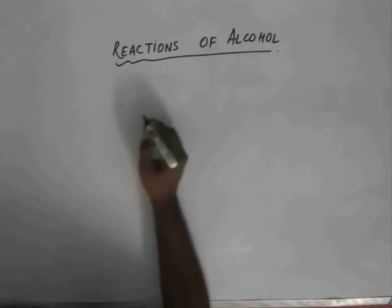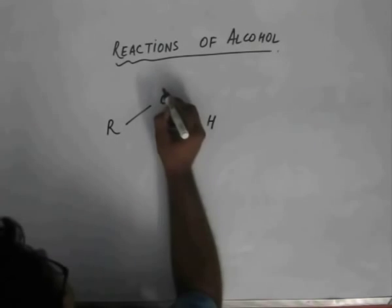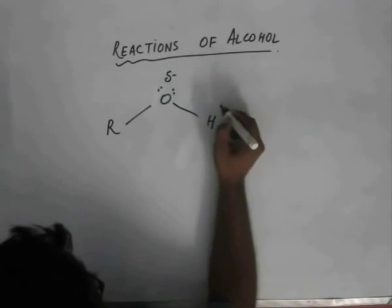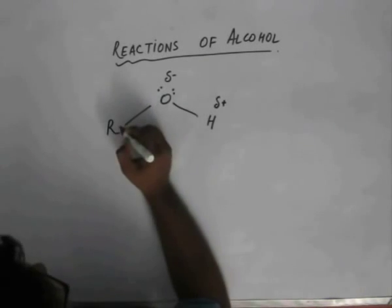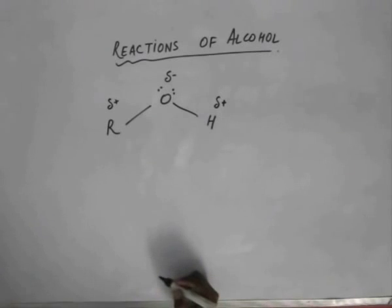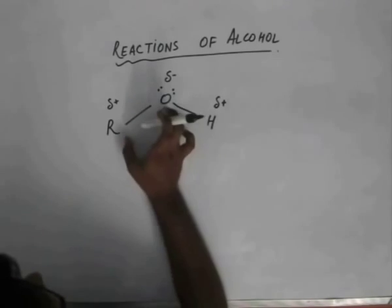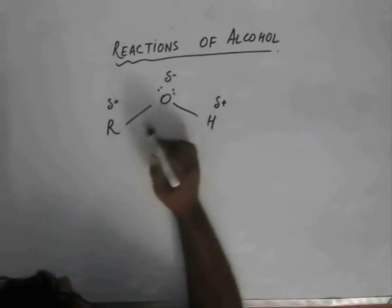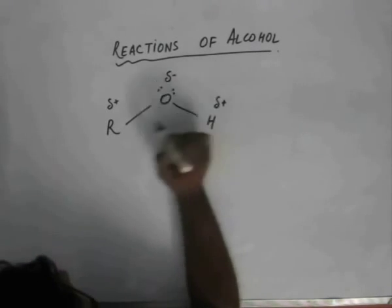This is our alcohol. Due to the high electronegativity of the oxygen atom, it gets polarized. Both the OH bond and the CO bond are polarized. Because of the high electronegativity of the oxygen atom, both the OH bond and the CO bond are polarized. This kind of governs the whole reaction chemistry of alcohols — the electronegativity of oxygen and the charge separation in the OH bond and the CO bond.